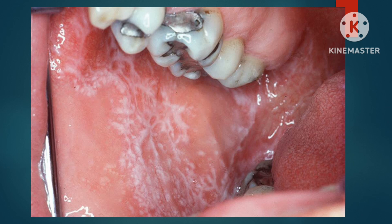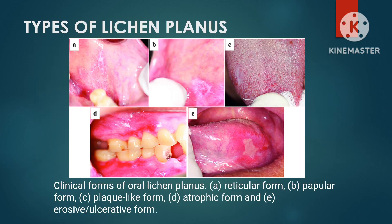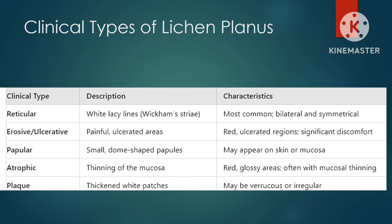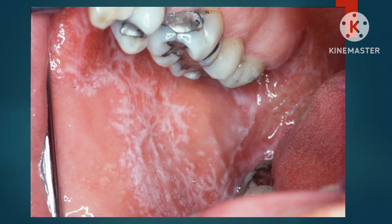Based on clinical presentation, reticular lichen planus is the most common type of oral lichen planus. It appears as a network of fine white lines on the mucous membranes. Other clinical types include erosive lichen planus, plaque-like lichen planus, atrophic lichen planus, and bullous lichen planus. Characteristics of all clinical types are described in the table shown — you may pause the video here and take a snapshot.